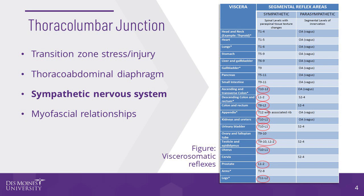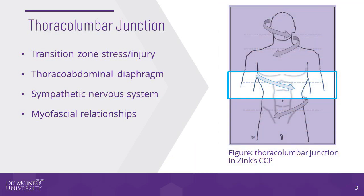These fascial or articular somatic dysfunctions can lead to restriction and or pain. Key myofascial relationships exist from the mediastinum through the diaphragm and its crura and down into the pelvis and lower extremity through the quadratus lumborum and the psoas.